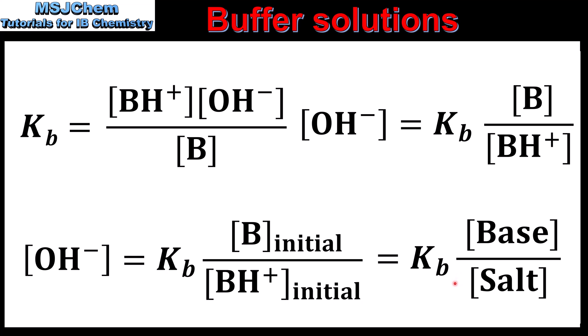If we know the Kb and the initial concentrations of the weak base and salt, we can calculate the hydroxide ion concentration. Taking the negative log gives the pOH, and subtracting that from 14 gives the pH.